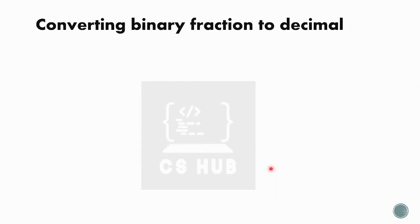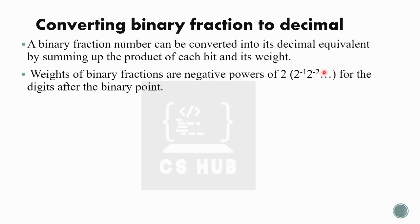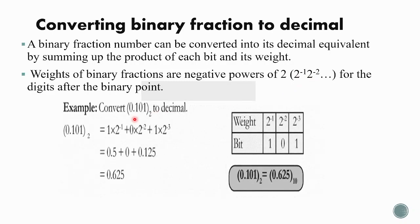Now, binary fraction to decimal. For fractions, the weights are negative powers of 2. The bit just after the decimal point has weight 2⁻¹, then 2⁻², 2⁻³, and so on. For example, 0.101₂: 1×2⁻¹ + 0×2⁻² + 1×2⁻³ = 0.5 + 0 + 0.125 = 0.625.